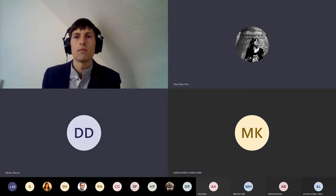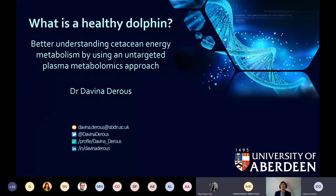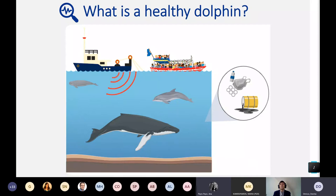Good morning, everybody. My name is Davina and my main research focus is trying to understand what a healthy dolphin is. Dolphins are exposed to a lot of different stressors — vessel noise, humans taking pictures of them (mainly tourism), plastics, and contamination. All of this can have a massive effect on their health. For example, foraging disruption leads to less food available, affecting their physiology, and if there's less energy to invest in overall physiology, this can impact survival, reproduction, and population dynamics.